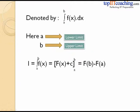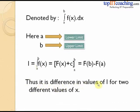If I equals the integral of f(x) from a to b, this equals capital F(x) plus c evaluated from a to b. We substitute x equal to b in the expression and subtract the value at x equal to a, giving I equal to F(b) minus F(a). So we first find the indefinite integral of f(x), then substitute x equal to b and x equal to a and subtract them. Thus I is the difference in values of F for the two limits x equal to b and x equal to a.